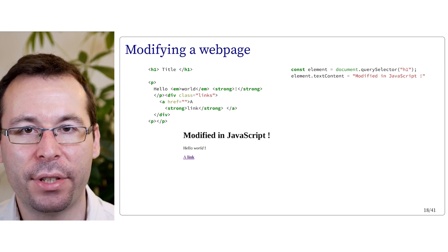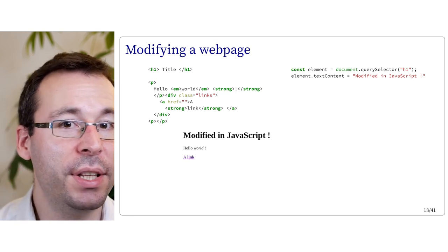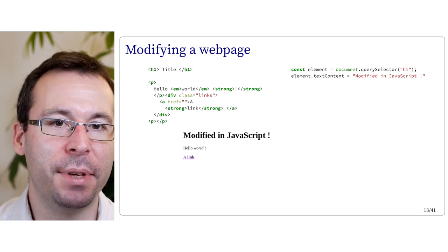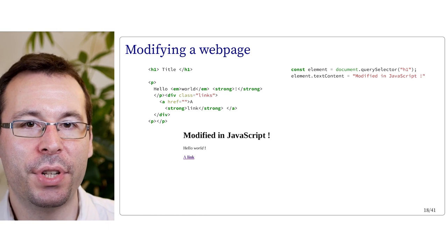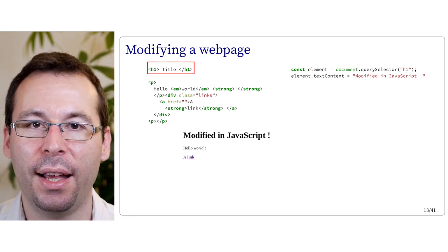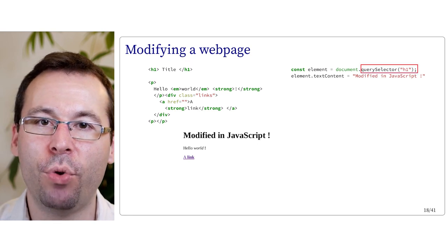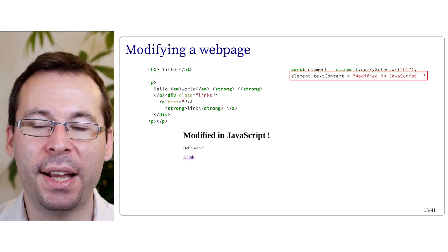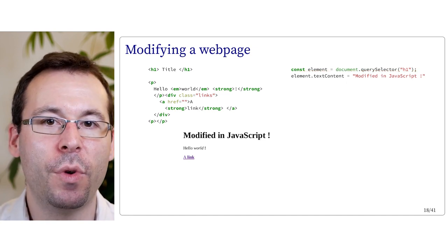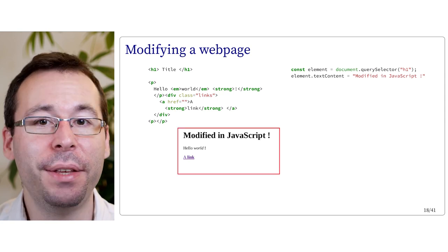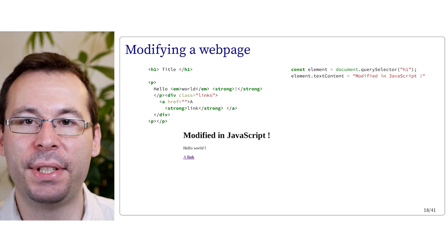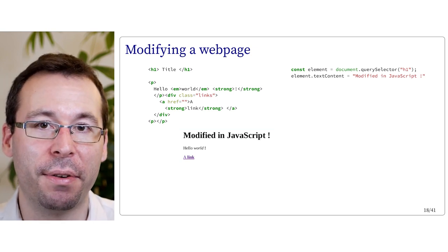We can also modify the text content from JavaScript — for instance, to display something based on some dynamic action. In this example, we have the same HTML code with a title inside the h1 tag. In the JavaScript, we query the same element and then modify its textContent with a new line of text. When we look at the webpage, we now see 'modified in JavaScript' as the title. Basically, the content of this element has been modified by the JavaScript code.